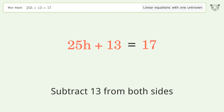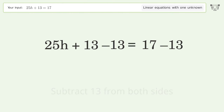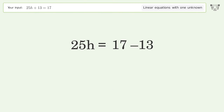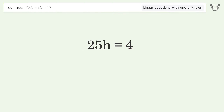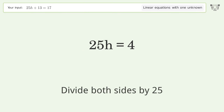Simplify the arithmetic. Then isolate the h — divide both sides by 25.